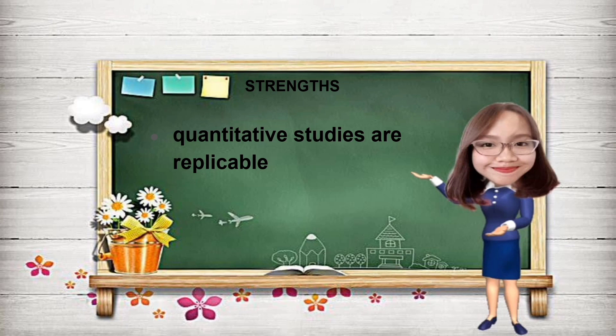Number five, quantitative studies are replicable. Standardized approaches allow the study to be replicated in different areas or over time with formulation of comparable things. By doing this, it can strengthen and reinforce validity of findings, eliminating the possibility of unreliable conclusions.